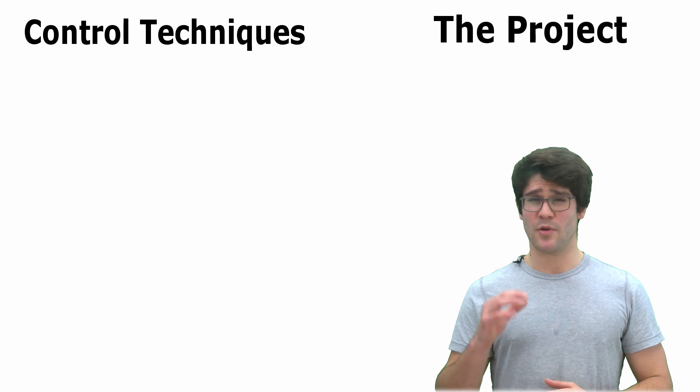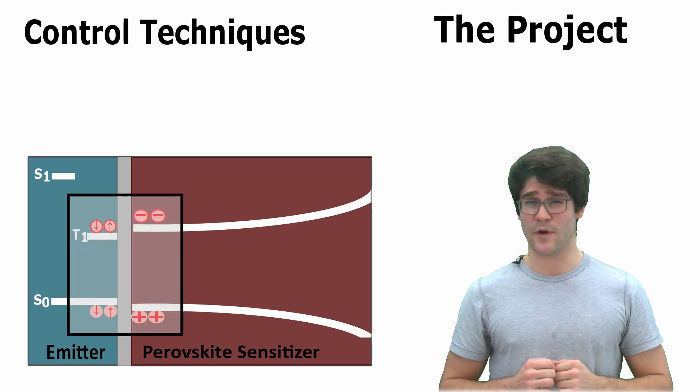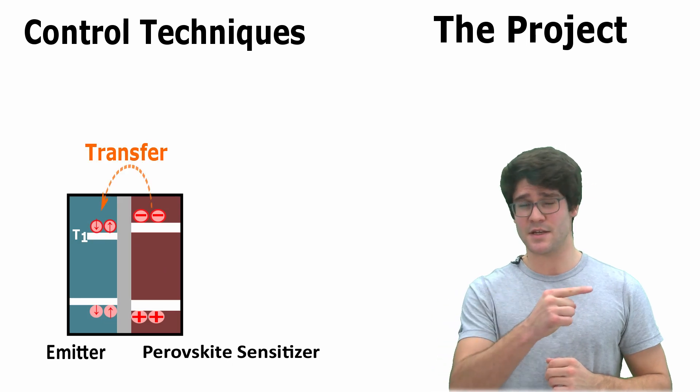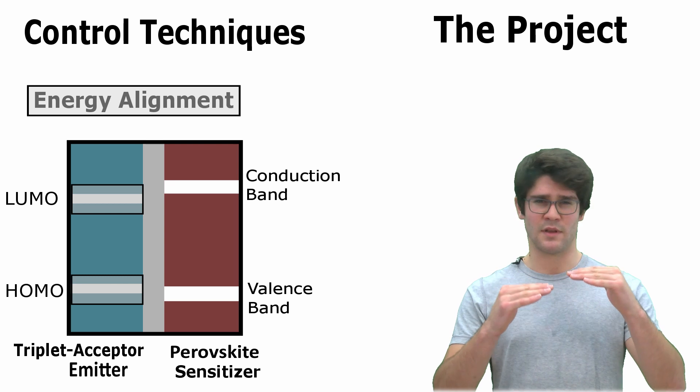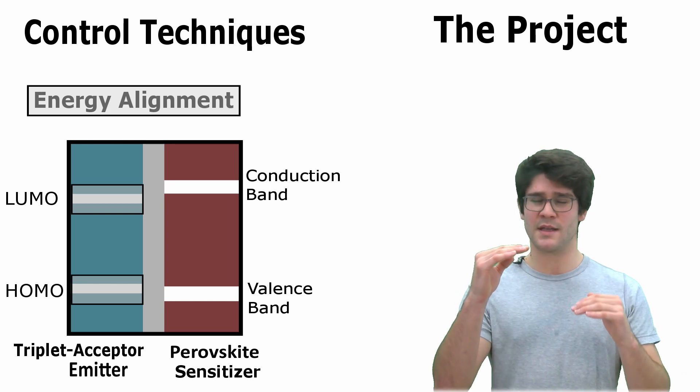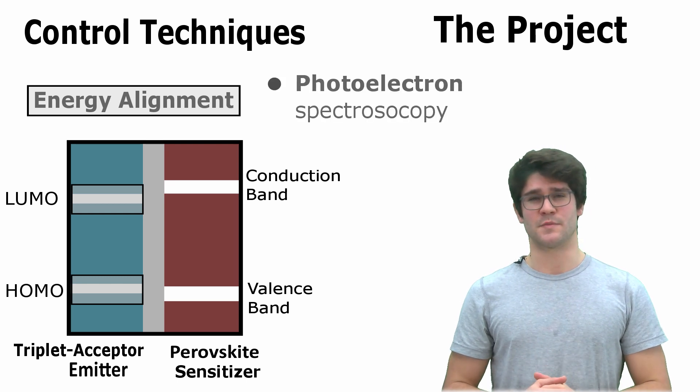And what about this interface? Between the perovskite sensitizer and the organic emitter, we have a hetero interface. Our main focus is to transfer excitation energy across it. For that, we need the right energy level alignment between the semiconductor bands and the organic orbitals, which we determine with photoelectron spectroscopy.